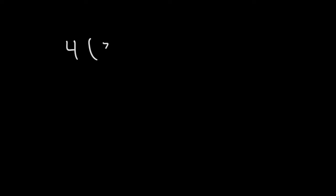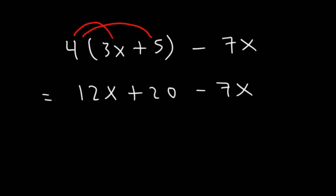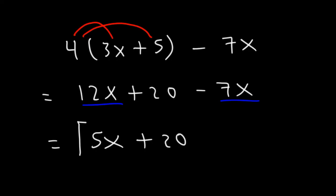What if you have parentheses? Consider 4 times the quantity 3x plus 5, minus 7x. We use the distributive property, distributing the 4 to both 3x and 5. 4 times 3x is 12x, and 4 times 5 is 20. Now combining like terms: 12x minus 7x is 5x. The final answer is 5x plus 20.